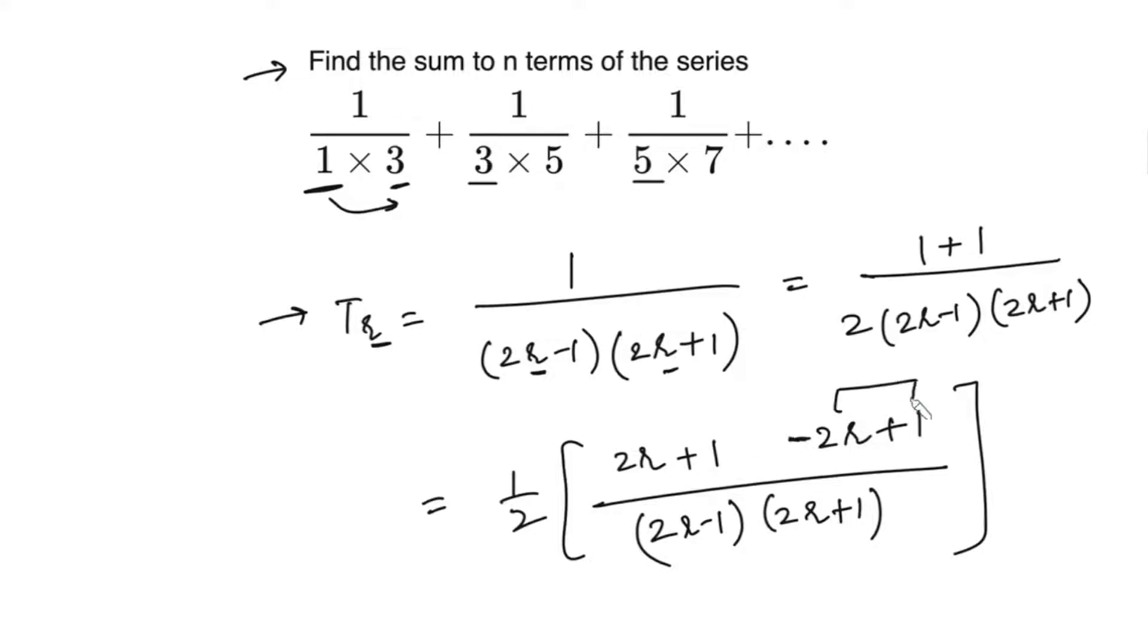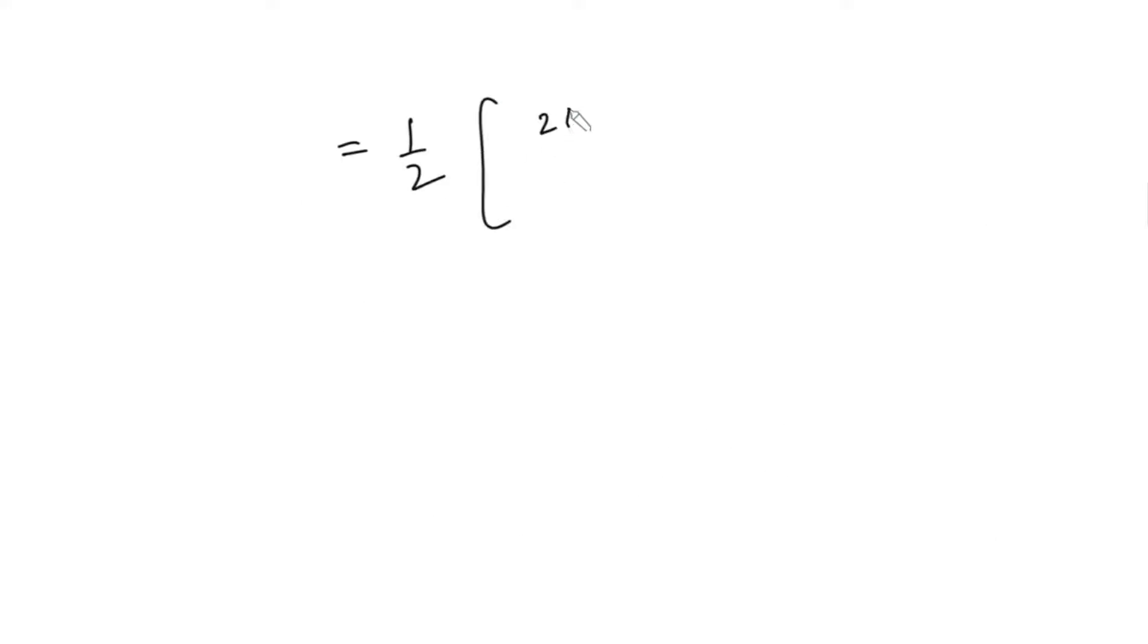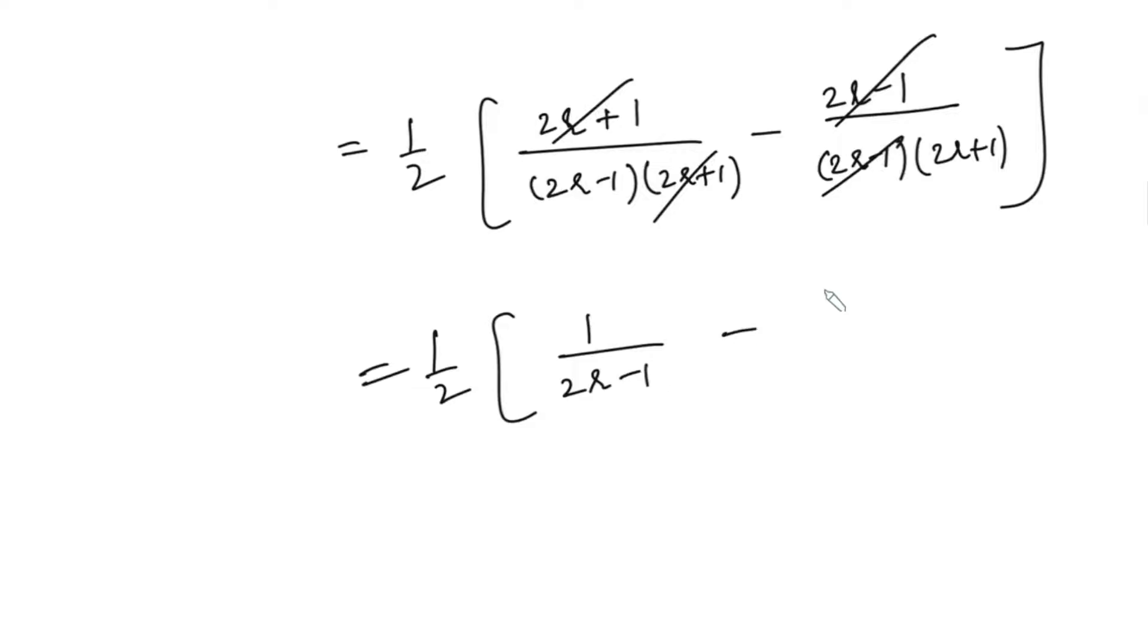And from the last two terms, if you take negative sign common, it will be in the form of 2r minus 1. And then we can split the terms. So if we split the terms, we will get (2r+1)/[(2r-1)(2r+1)] minus (2r-1)/[(2r-1)(2r+1)]. Here we can cancel 2r minus 1, here we can cancel 2r plus 1, so we are left with 1/2 times [1/(2r-1) - 1/(2r+1)]. So that is Tr.